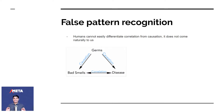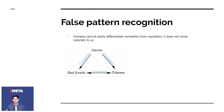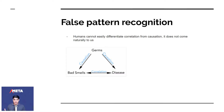Humans cannot easily differentiate correlation from causation because it does not come naturally to us — this is about false pattern recognition. We generate patterns for things that have no patterns; we can generate wrong patterns. For example, every time the bell rings and pizza comes, you start associating bell ringing with pizza arriving.